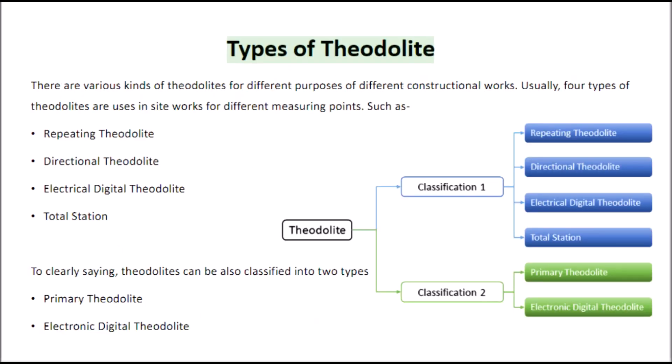Types of Theodolite. There are various kinds of theodolites for different purposes and constructional works. Usually, four types of theodolites are used in site works for different measuring points: Repeating theodolite, Directional theodolite, Electrical digital theodolite, and Total station.